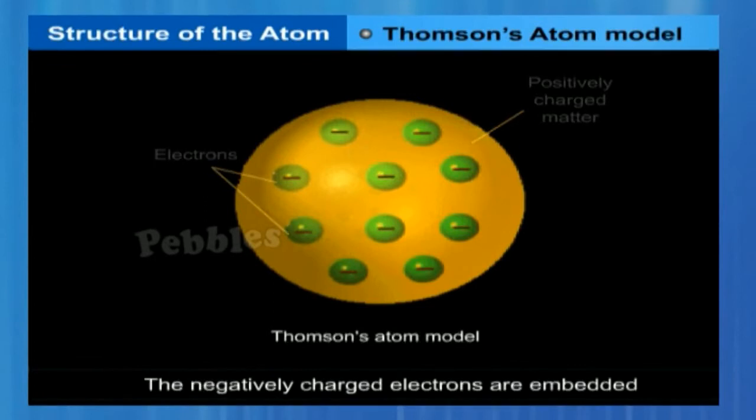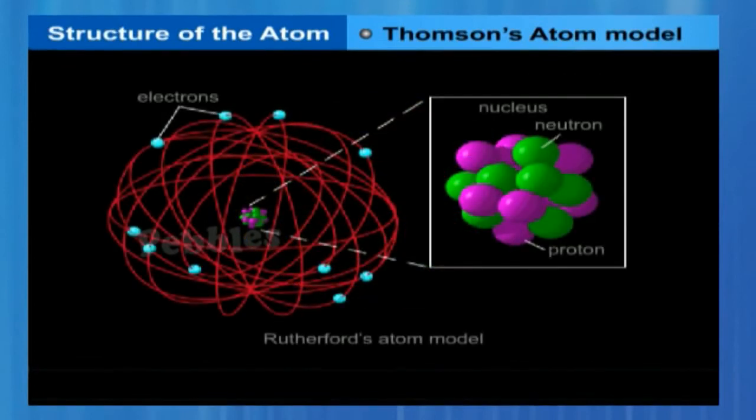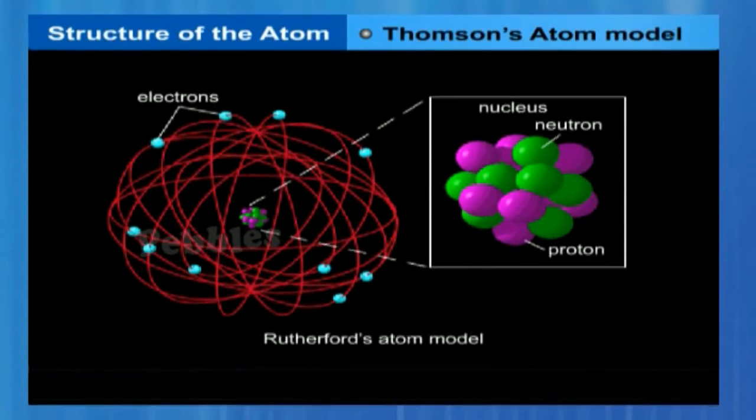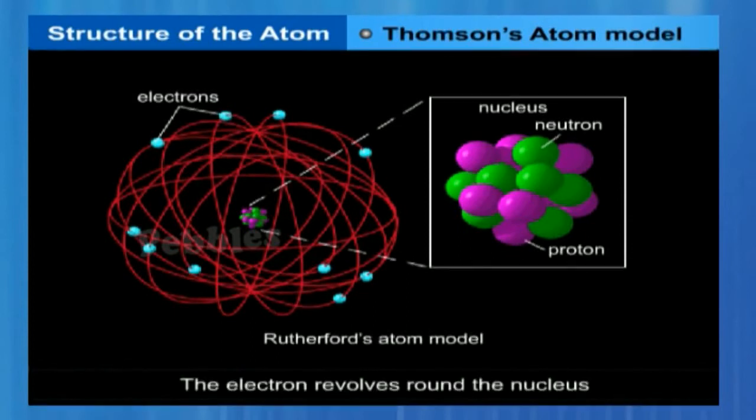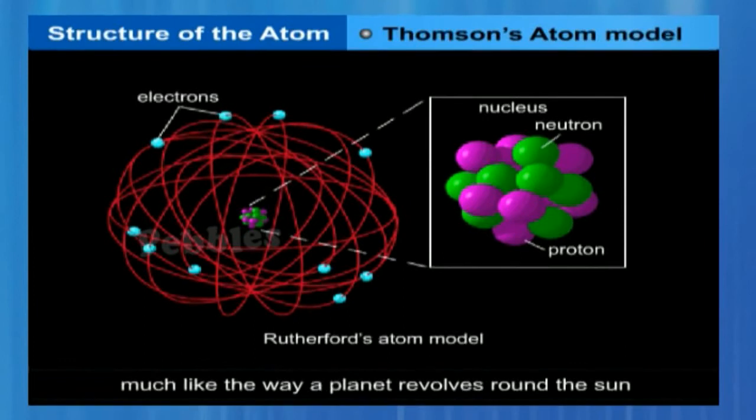Rutherford's nuclear model was a major step towards how we see the atom today. However, it could not explain why atoms emit light of only discrete wavelengths. In this classical picture of an atom, the electron revolves around the nucleus much like the way a planet revolves around the sun.